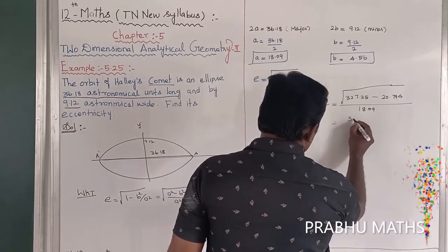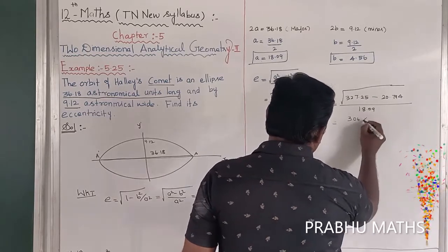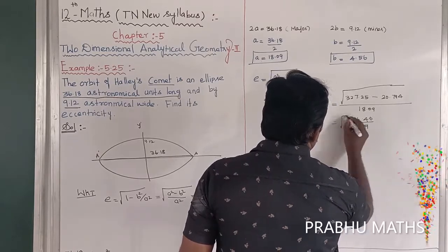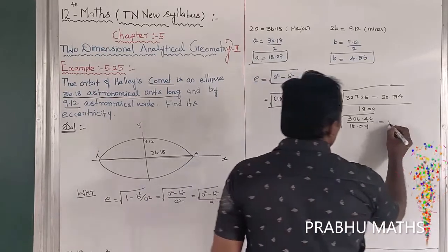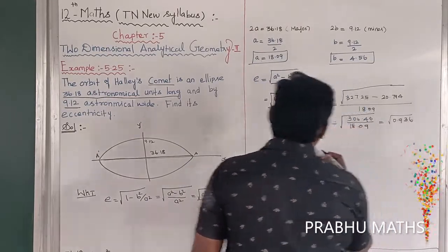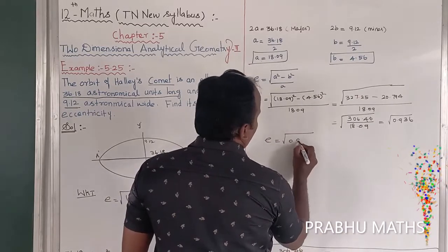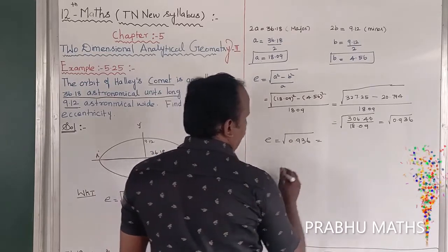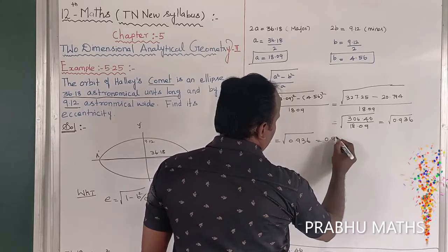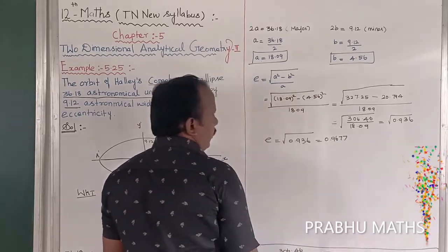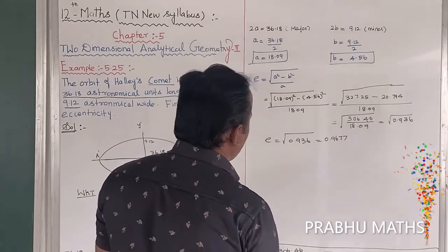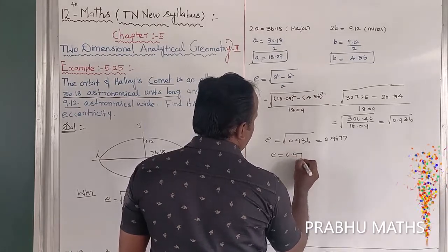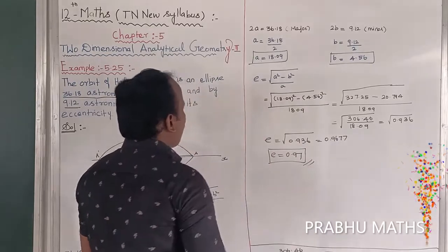So we have √306.246 / 18.09, which simplifies to √0.936. The square root of 0.936 equals 0.967, which is approximately 0.97. So the eccentricity is approximately 0.97.